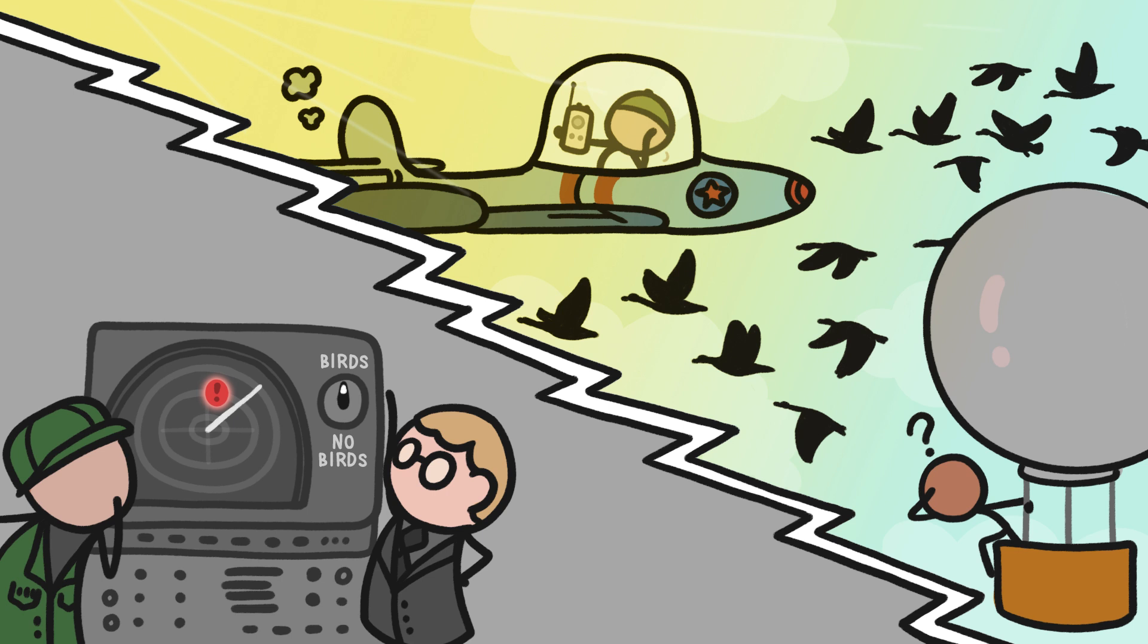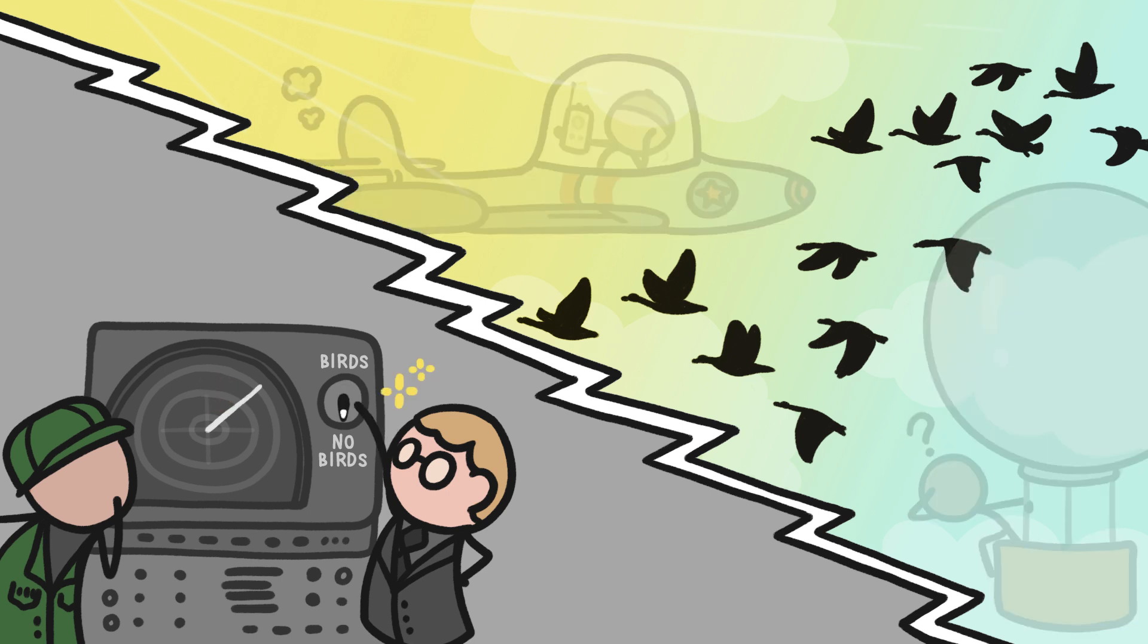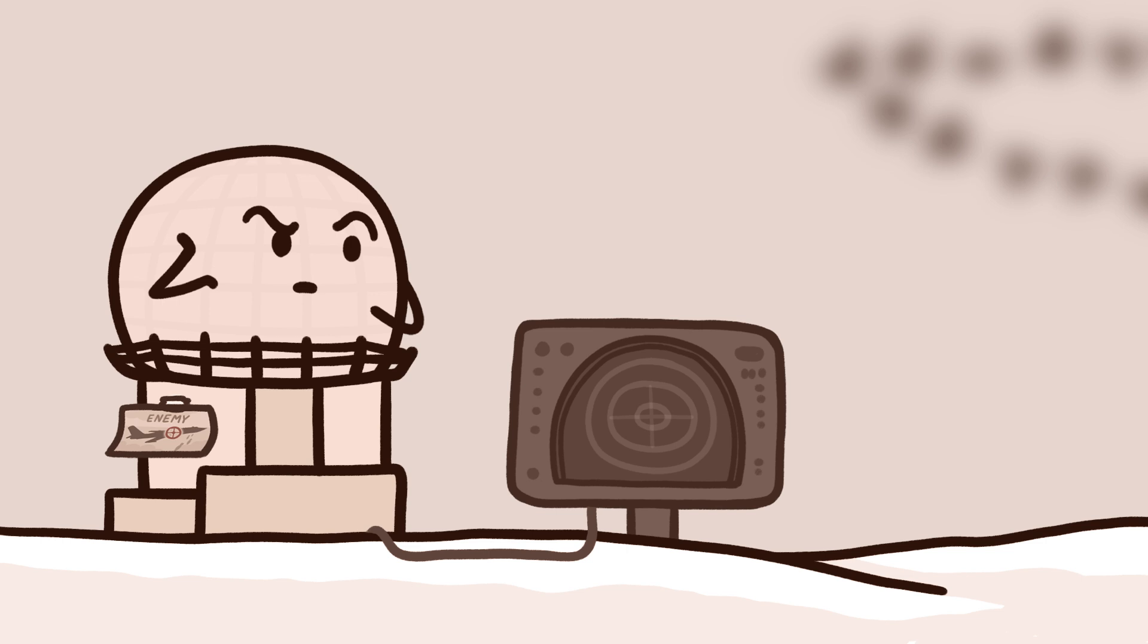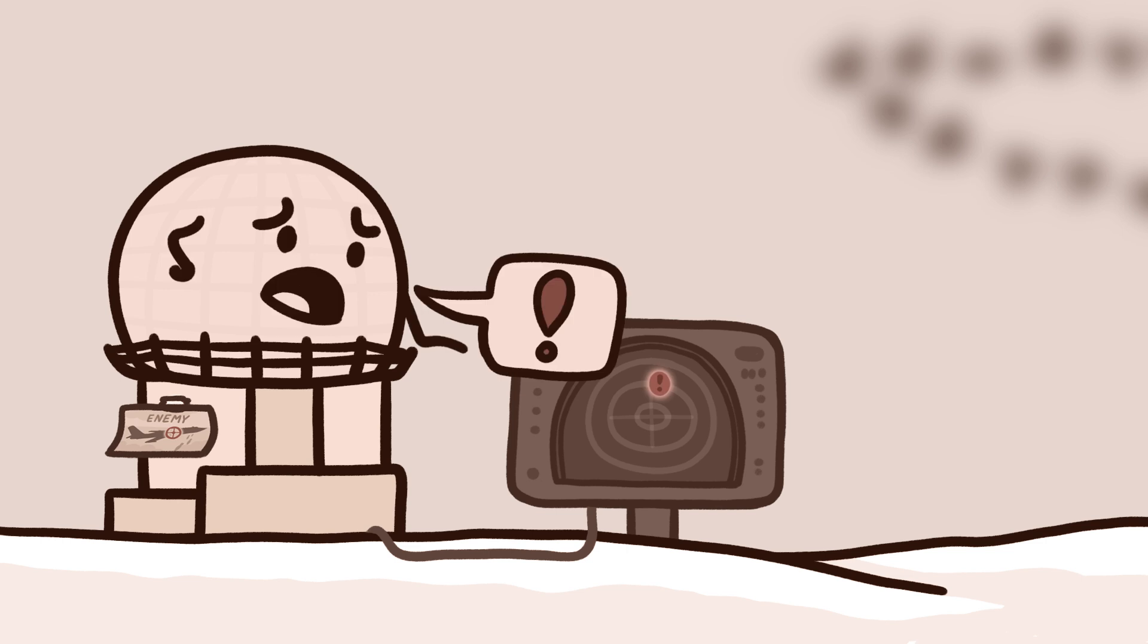But we've since gotten really good at erasing birds from radar, which has, weirdly, ended up helping birds. That Soviet-spotting radar, like all radar, would send out radio waves and then listen for what bounced back off stuff in the sky. But it was only equipped to tell us that something was up there. It couldn't tell us anything about that thing.